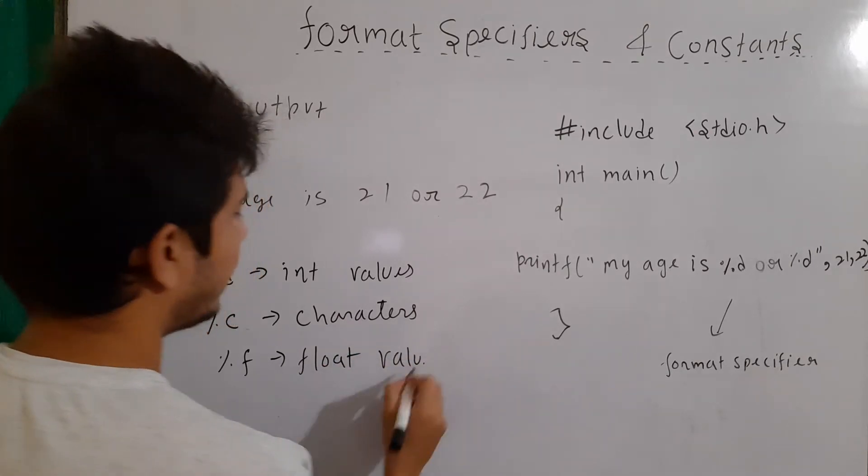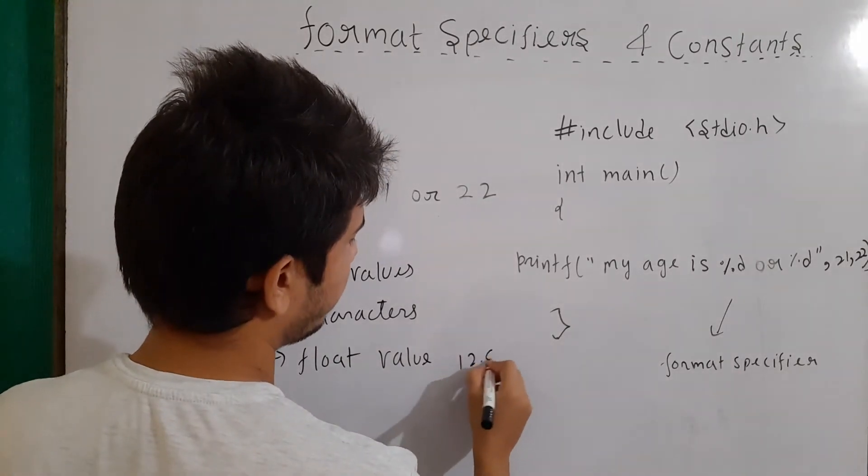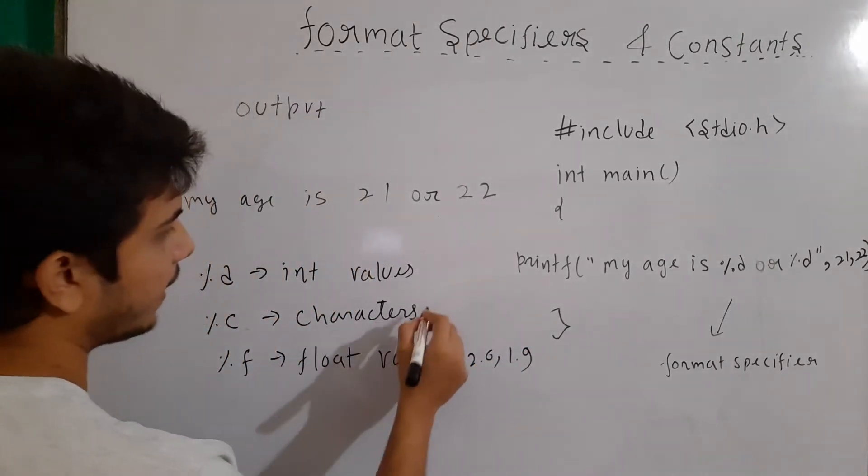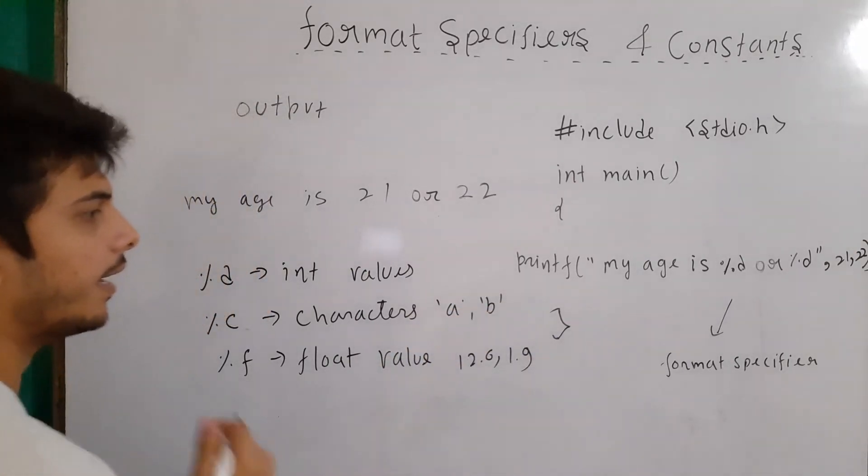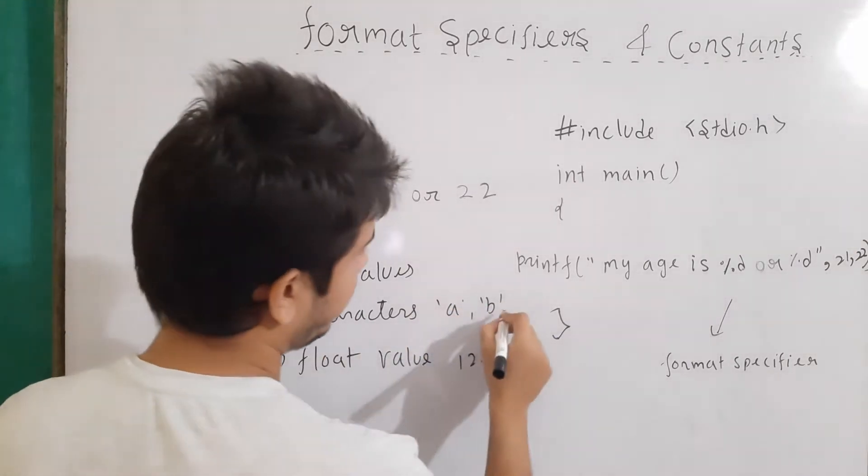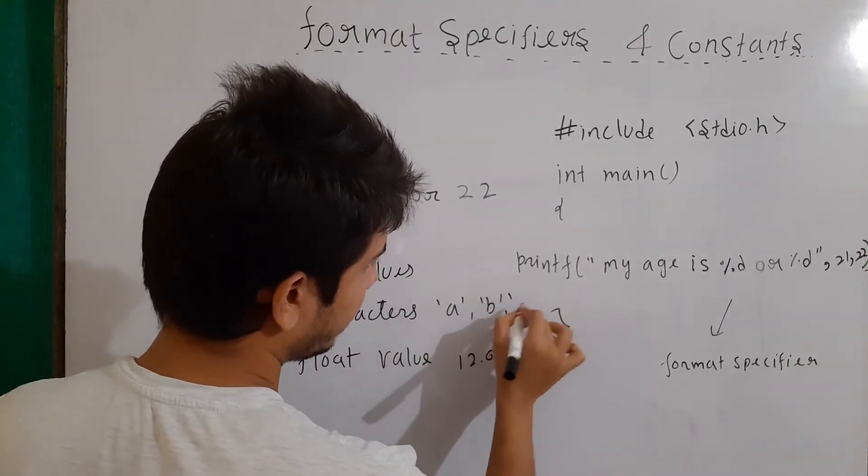Now float values means which has the decimal part, for example, 12.6 or 1.9. For characters like a, b, any symbol, any letter, any digit, if it is written inside the single quotes.